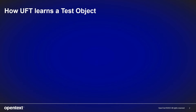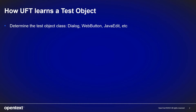Let's take a look at how UFT learns a test object. It starts by determining the test object class. For example, if it is a button on the web page, it is recognized as a web button. If it is an input field in a Java application, it is recognized as a Java edit. We have a large set of predefined test object classes that help to distinguish the nature of a test object.